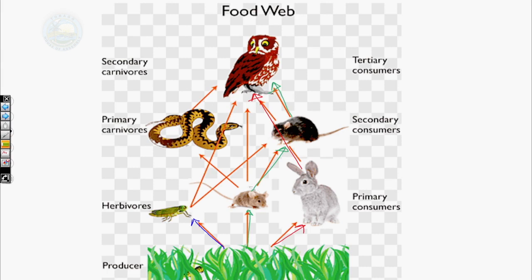Your food web also shows animals which are dependent upon another for survival. For example, this snake is dependent upon the rat for food. However, the mouse is dependent upon grasshoppers and other organisms for food. So you're seeing that the snake and the rat are dependent upon different organisms. Your food web shows several interconnecting food chains and several layers of interdependency.